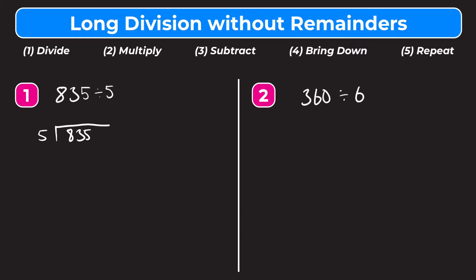We ask ourselves how many whole groups of 5 go into 8 — that would be 1. Next step is multiply: 1 times 5 is 5, and we write that underneath the 8. Next step is subtract: 8 minus 5 is 3. Then our next step is bring down, so we bring down the 3 from 835 and now we have 33.